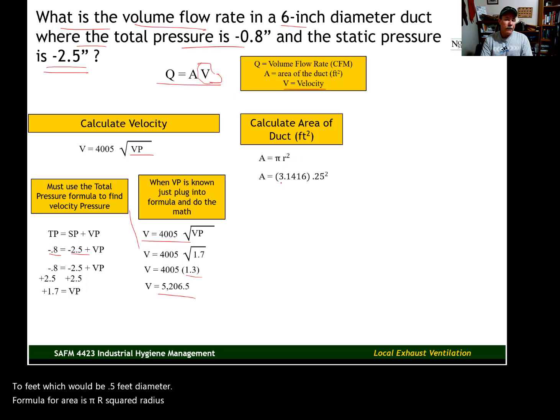Radius is half the diameter. So we take that 0.5 foot diameter, divide that by 2. We have a radius of 0.25. Then we square that. And pi is pi. Multiply pi times 0.25 squared. We end up with a cross-sectional area for this 6-inch duct of 0.196 square feet.